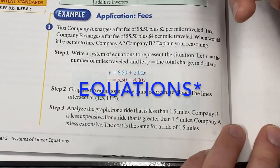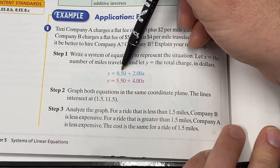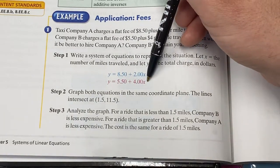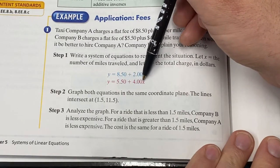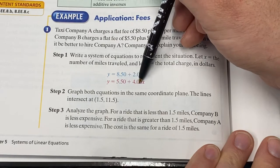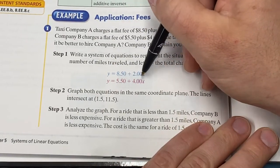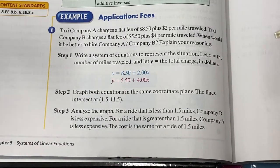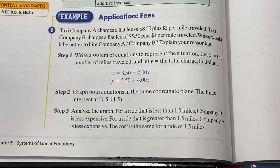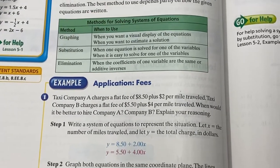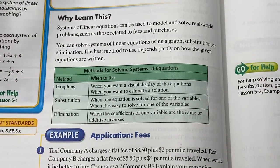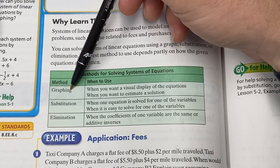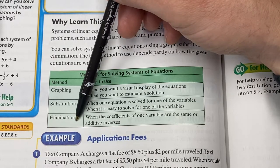So here in red and blue are the two systems for each company here. In blue is company A, the $8.50 plus $2 per mile. Total charge will equal $8.50 plus $2 per mile. In red here is company B, the $5.50 plus $4 per mile. Y equals $5.50 plus $4 per mile. Now, once you get here, once you get to the system, you've read the problem, you've written your let statement, and now you have your system. With word problems, you have a choice to solve the system using whatever method you want.